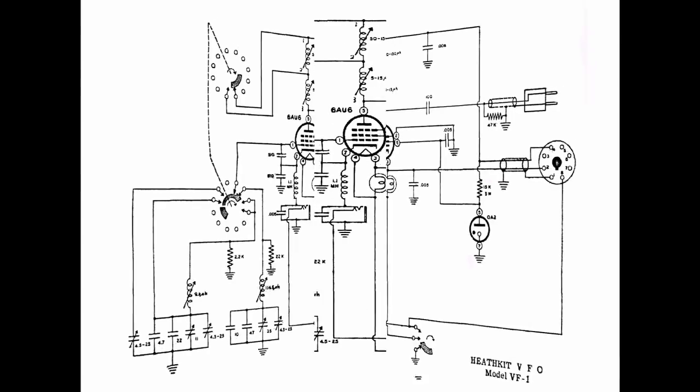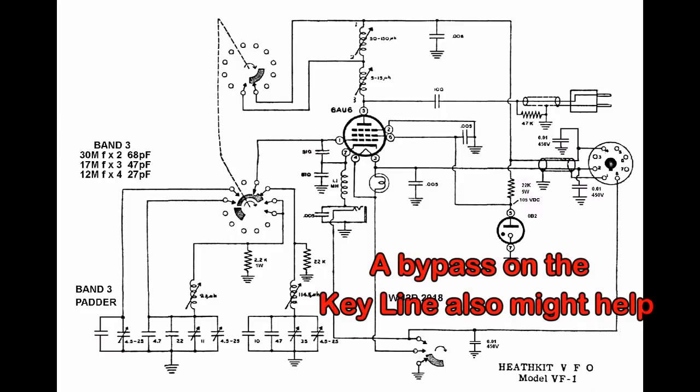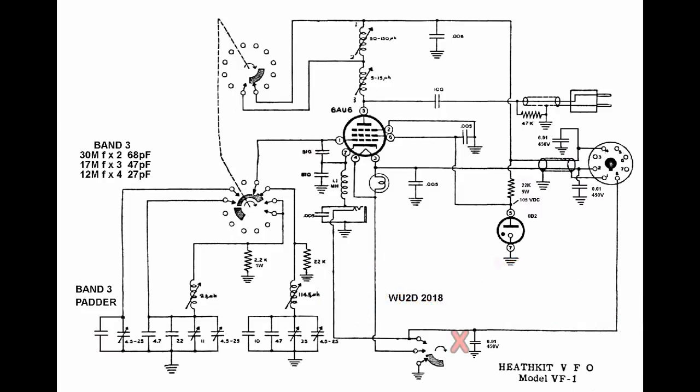A modified circuit - I actually took the advice that I saw online of lowering the screen grid voltage from 150 volts to 105 volts, and I also added two 0.01 bypass capacitors on the filament and the high voltage. I figured out how to pad down band three so that it could be useful in some of the WARC bands such as 30 meters, 17 meters and 12 meters.